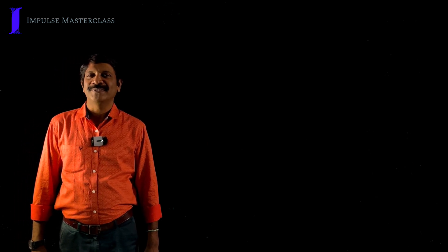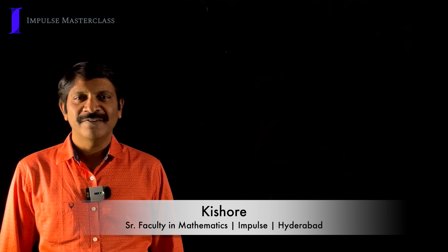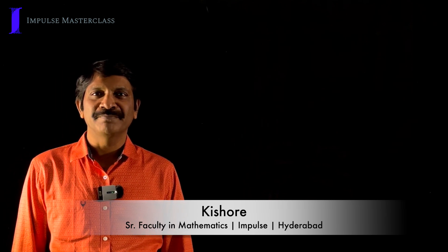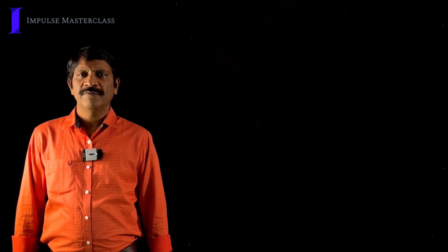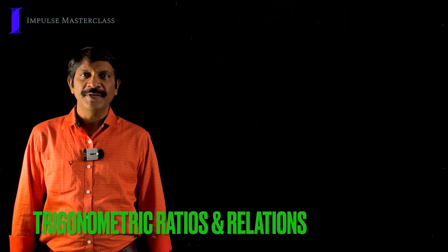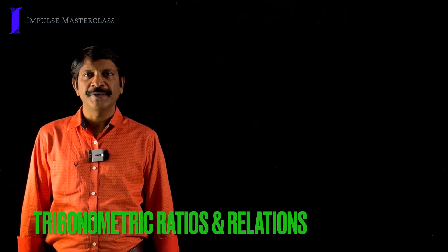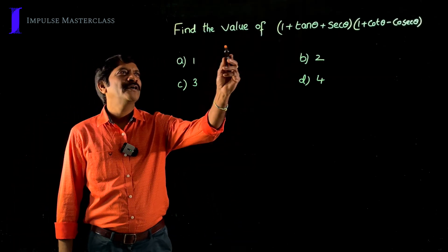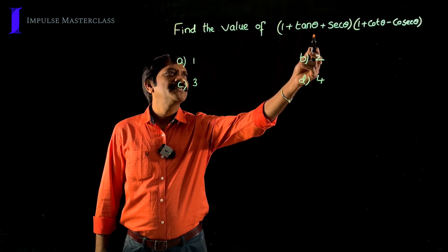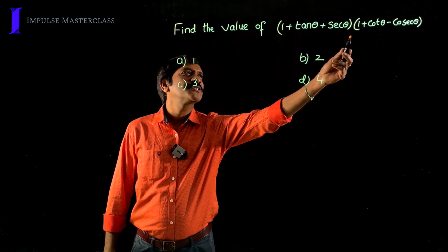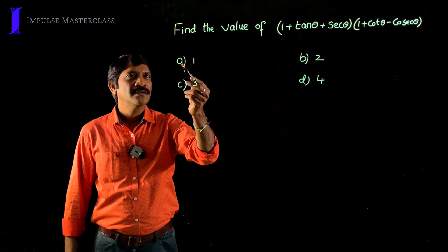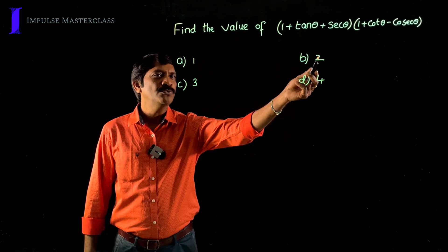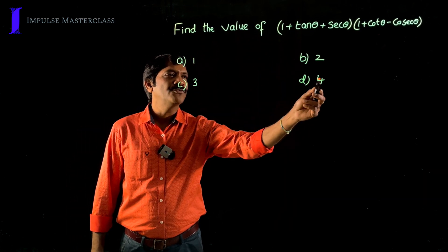Dear students, welcome to Impulse Master Classes, a program designed for 10th class students. I am Kishore, senior faculty in mathematics working with Impulse Junior Colleges. Today we are going to discuss trigonometry — specifically trigonometric ratios and their relations. Let us have a look at this question: find the value of (1 + tan θ + sec θ)(1 + cot θ − cosec θ). The options are a) 1, b) 2, c) 3, and d) 4.